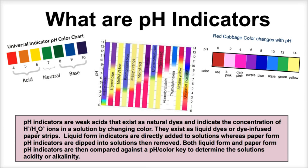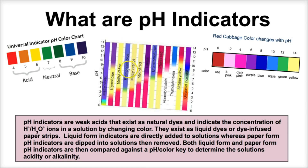There are several different types of pH indicators that we can use to check the pH levels of different solutions. We can compare the color that a dye turns to a chart like the universal indicator pH color chart, the red cabbage color chart, and several other types of indicators — and the colors they change help us determine what the pH level of that solution is.